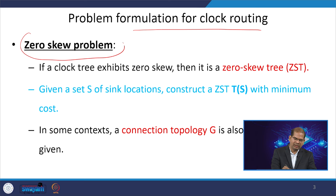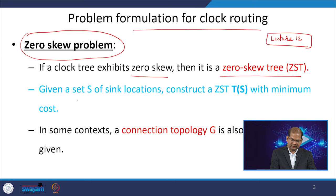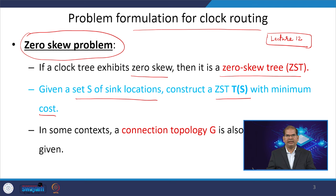We have the zero skew problem — we want the clock skew to be ideally 0, as discussed in lecture 12. If you have not gone through that lecture, please revisit lecture 12. The skew should be ideally 0, so if the clock tree exhibits a zero skew, it is called a zero clock skew ZST. Given a set S of sink locations, we need to construct ZST of T(S) with minimum cost.